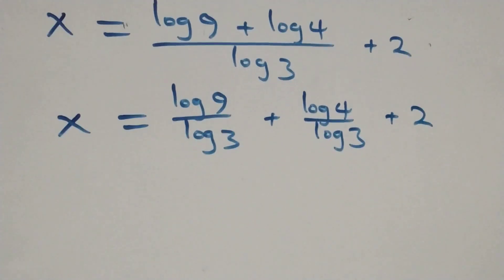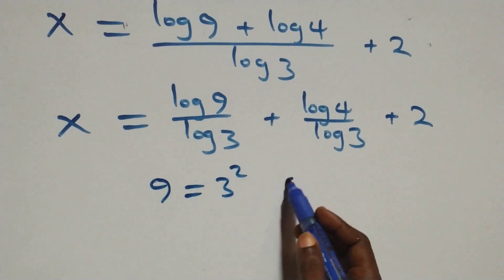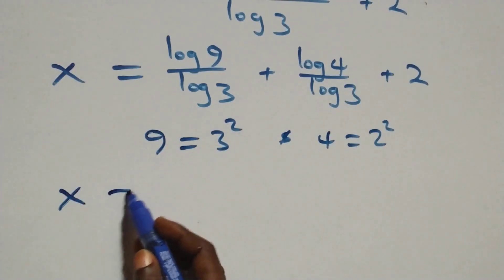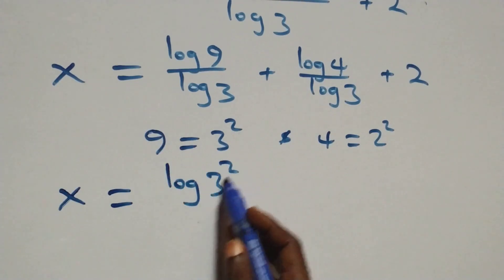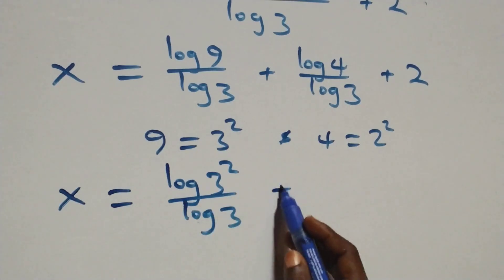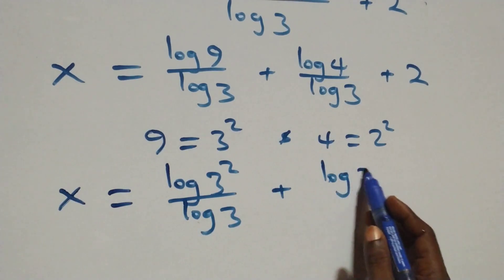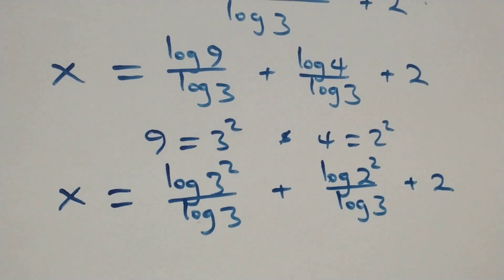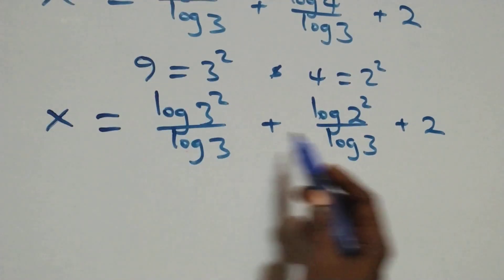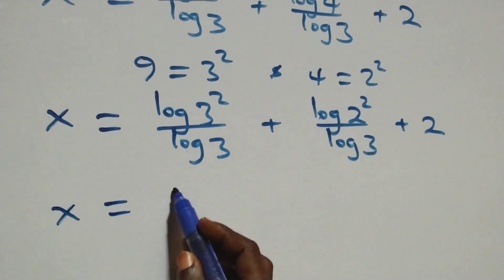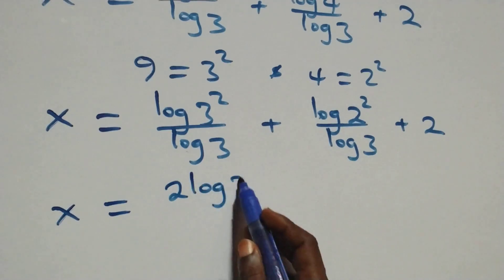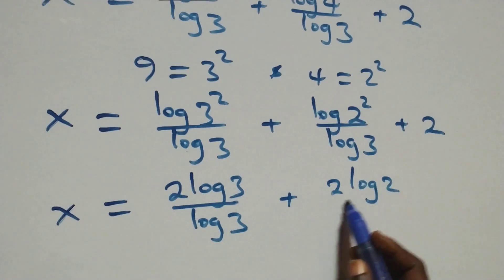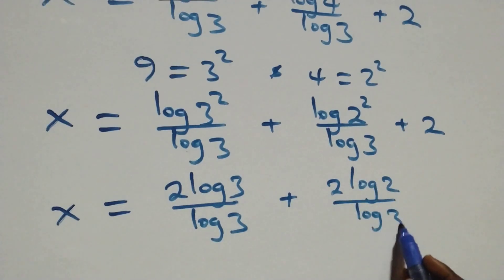We can write 9 as 3 times 3, which is 3 squared, and also 4 as 2 times 2, which is 2 squared. So we have x equals log 3 squared over log 3, plus log 2 squared over log 3, plus 2. Applying the power rule of logarithms, 2 comes out from each term, giving x equals 2 log 3 over log 3, plus 2 log 2 over log 3, plus 2. The log 3 terms cancel, leaving 2.